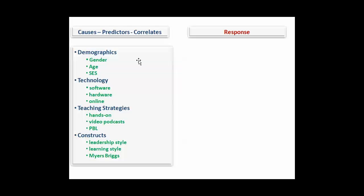For example, when we're talking about things, we're talking about demographics, technology, teaching strategies, and constructs. Examples of demographics might be gender, age, SES. Basic descriptors of your population that might be associated with a specific pattern of response.